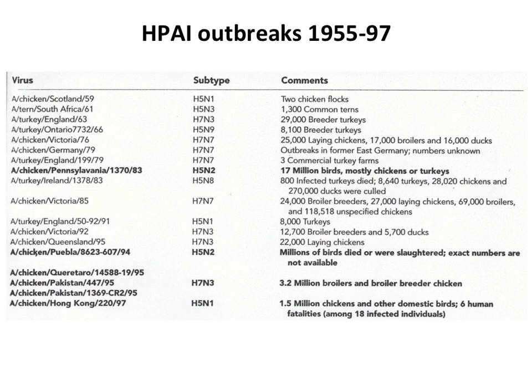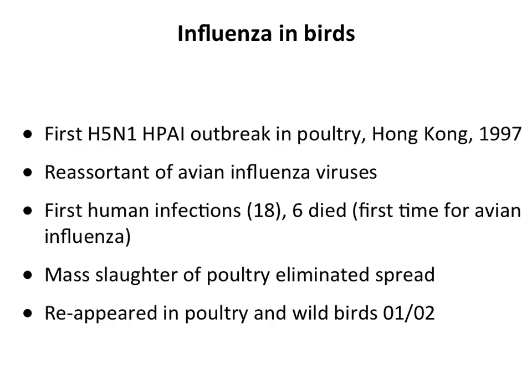The first high pathogenicity outbreak of H5N1 was in 1997 in Hong Kong. This was a reassortant virus — a new virus, not like any others circulating at that time. It was a mixture of influenza viruses from various kinds of birds. It infected a lot of chickens; they had to be culled to stop the outbreak. Eighteen people were infected in Hong Kong and six died. Mass slaughter of poultry was done to eliminate the spread, vaccines were developed, and the virus basically disappeared for several years.